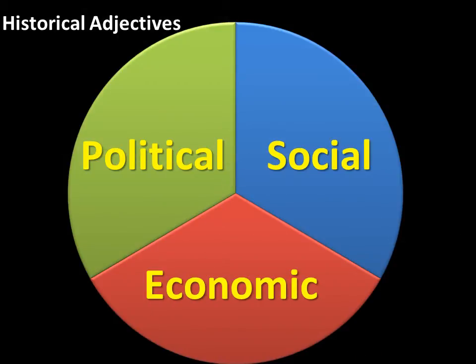Political, social, and economic are three very important historical adjectives or describing words. We're going to use these words almost every day. Usually, we will ask you to describe a historical event as either political, social, or economic. Here are your hints: anything having to do with the government is usually political. Anything having to do with money, wealth, natural resources, or the production or sale of goods is economic. And anything having to do with people, how they treat each other, and their patterns of behavior is social. The tricky part is that many times a historical event can connect to two or all three of these words, so make sure you know them and are comfortable with them.